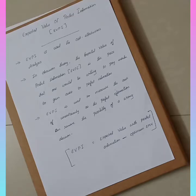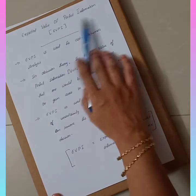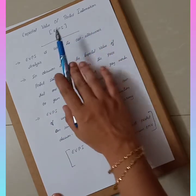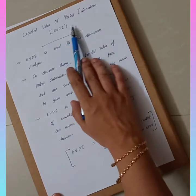Dear students, today we will discuss the last criterion which comes in decision making under risk — that is Expected Value of Perfect Information, or EVPI.